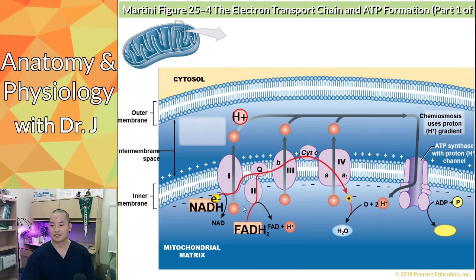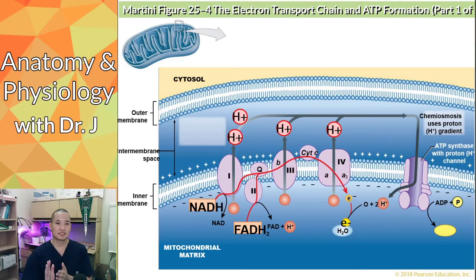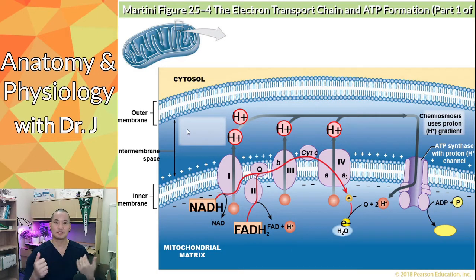These electrons and protons go through a series of proteins. As the electrons travel through, the protons they were carrying get moved from the inside. The mitochondria has sub-layers — it's one of the special organelles because it has a double membrane: an outer membrane and an inner membrane. The innermost part, inside both membranes, is called the mitochondrial matrix.